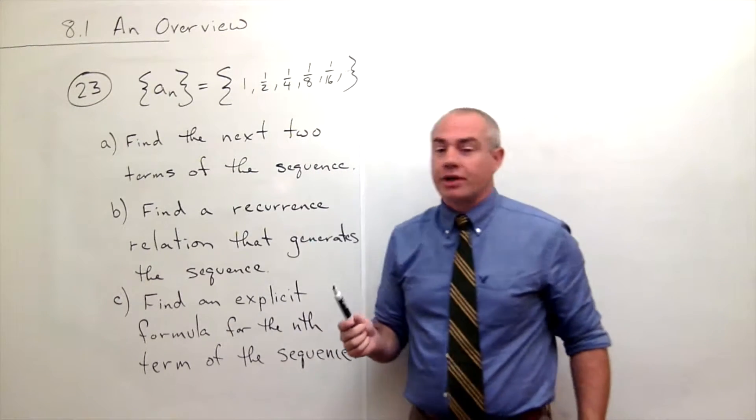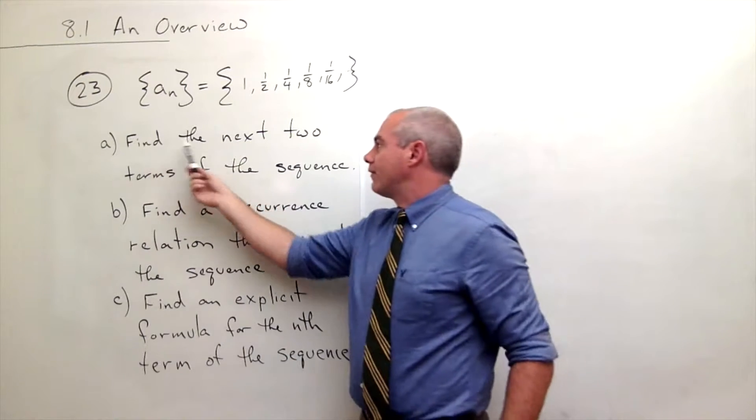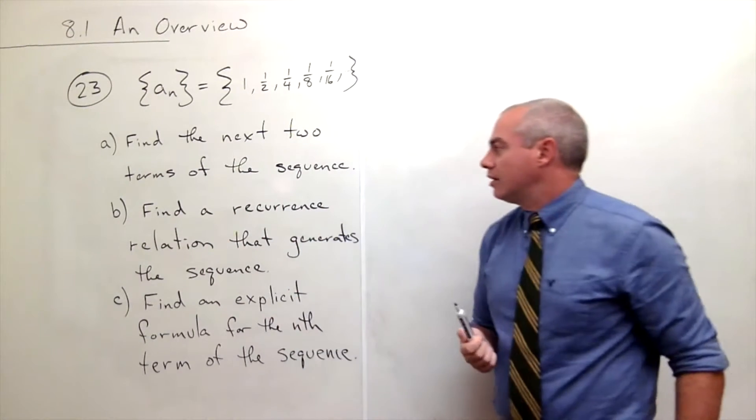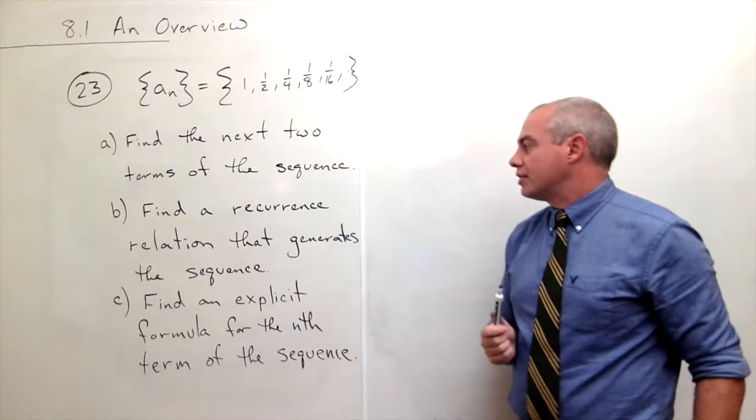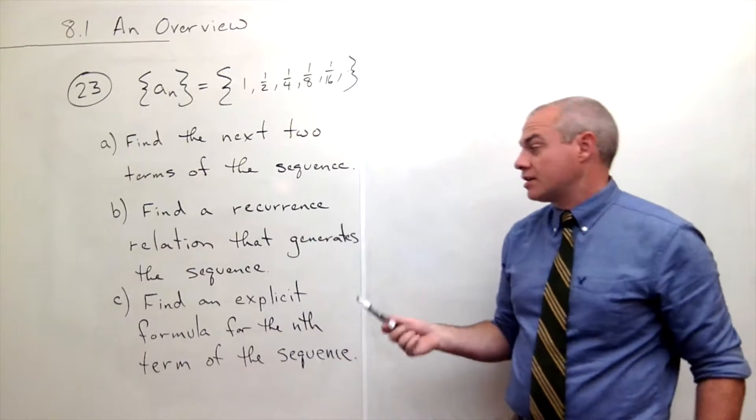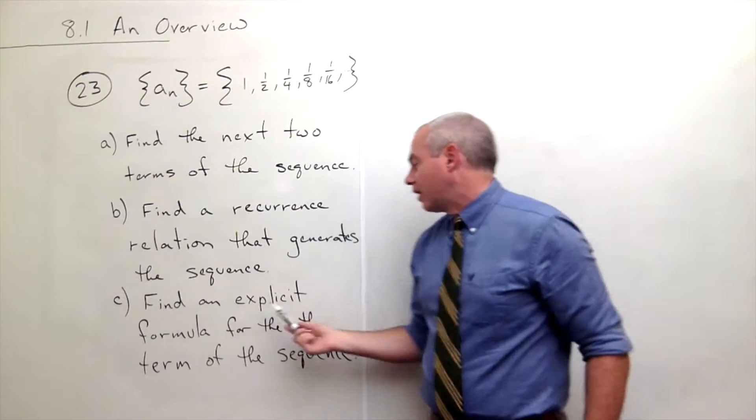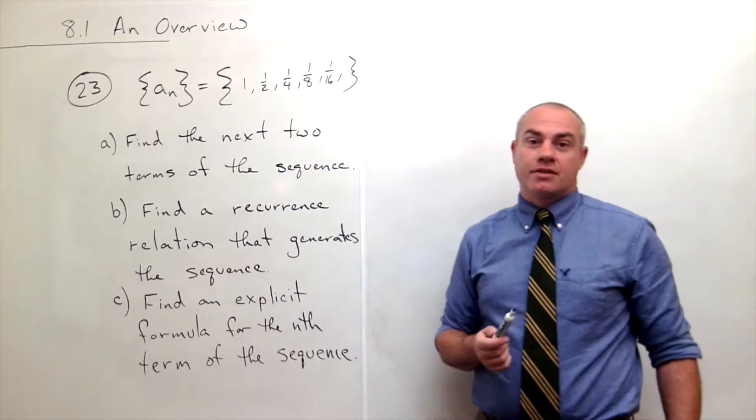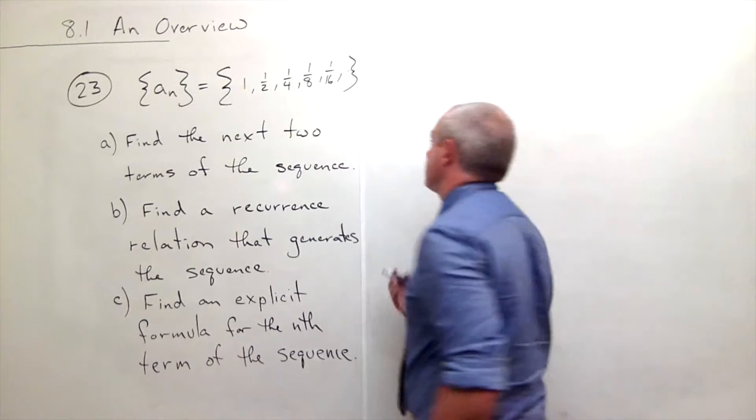And we want to do three things here. First of all, we want to find the next two terms of that sequence. Then part b, we'd like to find a recurrence relation that generates the sequence. And then finally, we'd like to find an explicit formula for the nth term of the sequence. So let's do each of these things.